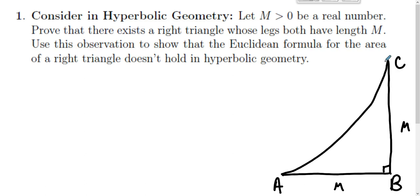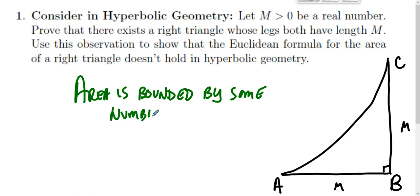So this has length M, this has length M, that's a right triangle. So here we are in hyperbolic geometry and you're wondering why isn't the area of this triangle always one half M squared? What's interesting here is that we know that area is bounded by some number, little b. There's some upper bound on area in this hyperbolic geometry.